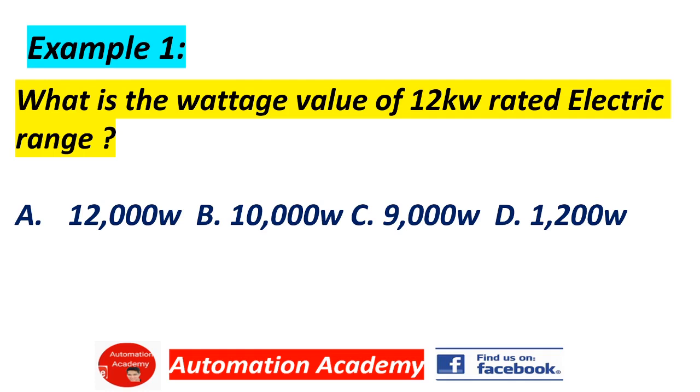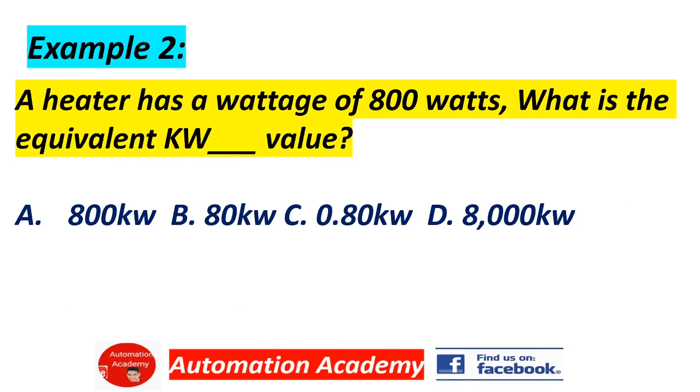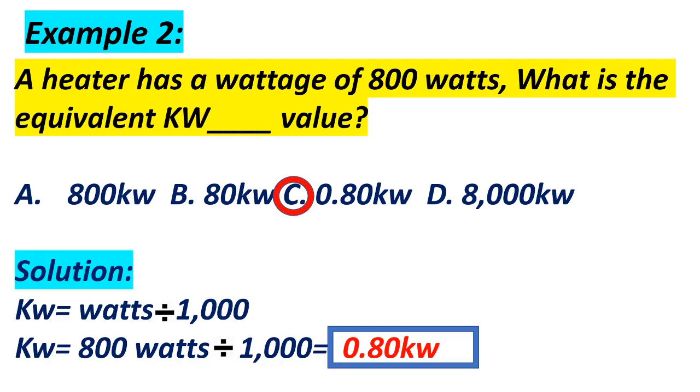Example: What is the wattage value of 12 kW rated electric range? A. 12,000 watts, B. 10,000 watts, C. 9,000 watts, D. 1,200 watts. Answer: A, 12,000 watts. Solution: 1 kW equals 1,000 watts, so 12 kW times 1,000 watts equals 12,000 watts. A heater has a wattage of 800 watts, what is the equivalent kW? A. 800 kW, B. 80 kW, C. 0.80 kW, D. 8,000 kW. Answer: C, 0.80 kW. Solution: kW equals watts divided by 1,000, so 800 watts divided by 1,000 equals 0.80 kW.